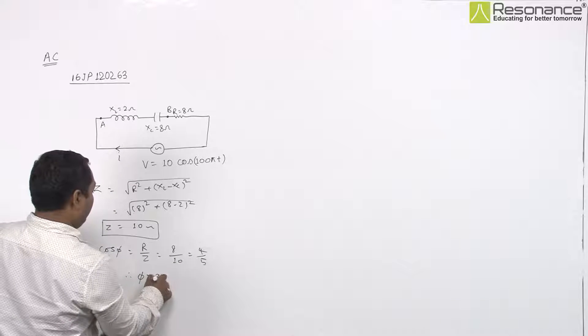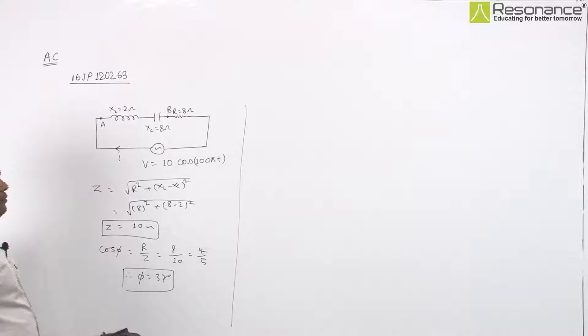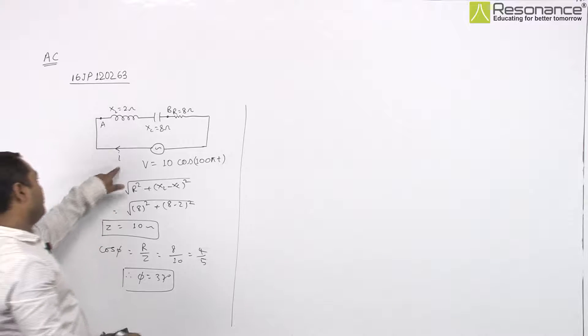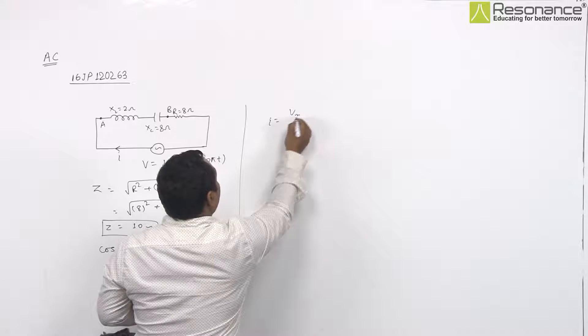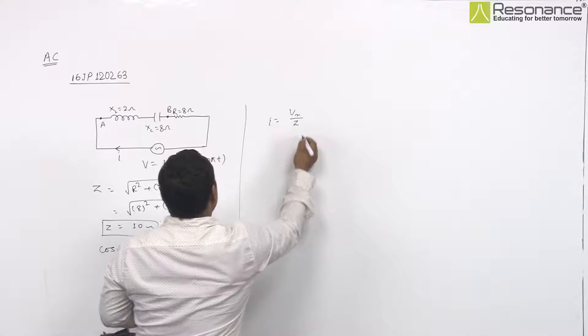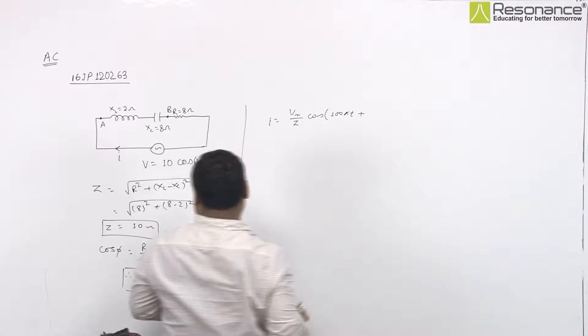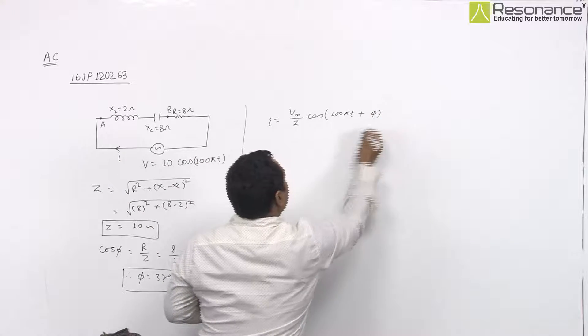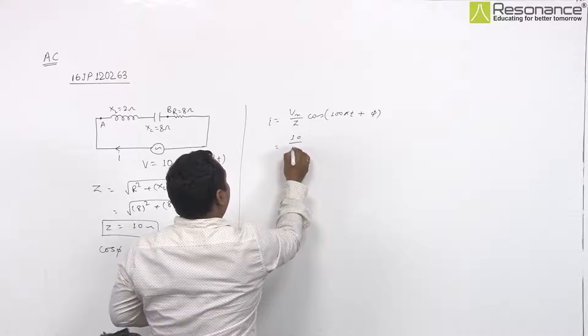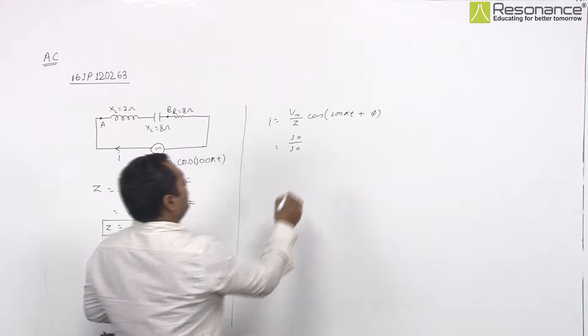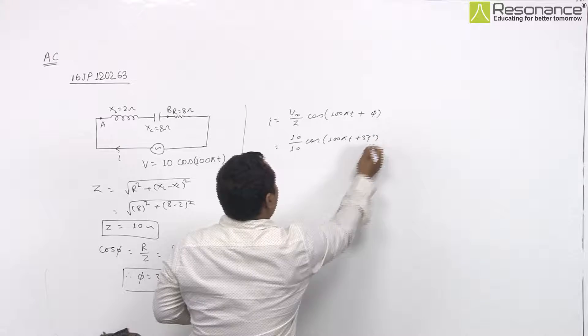Therefore, phi will be equal to arccos 4/5. So when you go for writing the equation of current I, I will be Vm upon Z cos 100 pi T plus this phi. So result will be Vm is 10, 10 upon Z is 10, cos 100 pi T plus 37 degree.